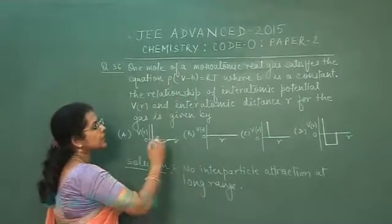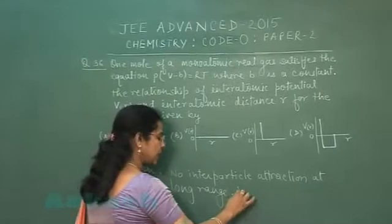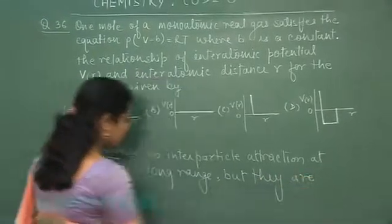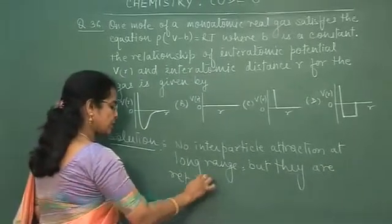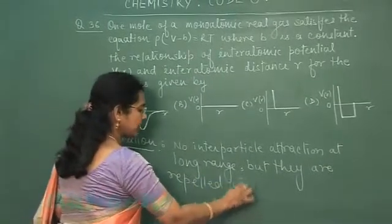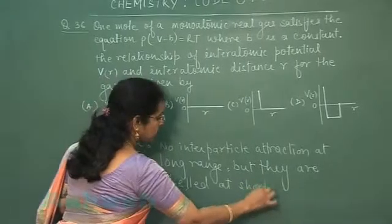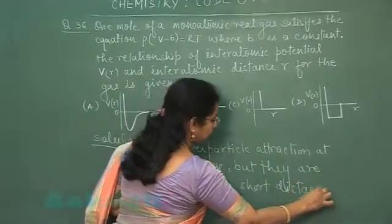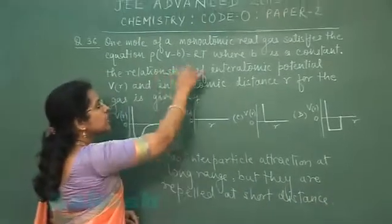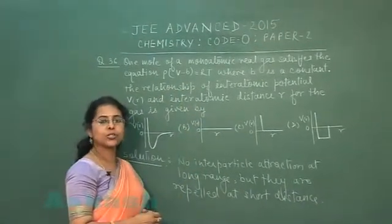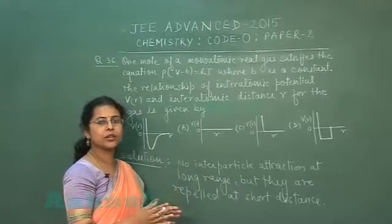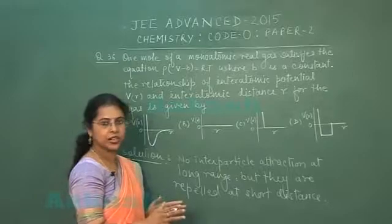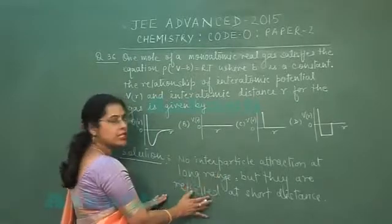these particles are repelled but they are repelled at short distance. Here the equation is given, according to short distance, it is repelled at short distance and there is no attraction at long distance. Now if this condition we will check in the form of graph,